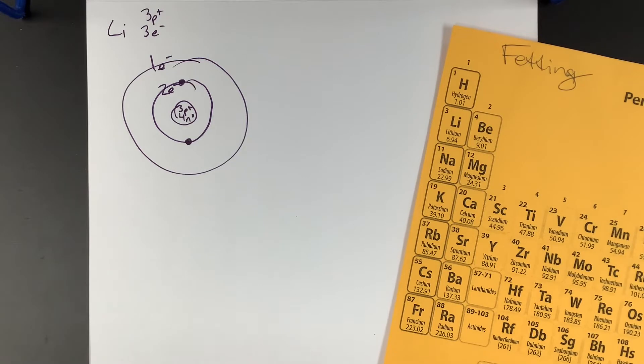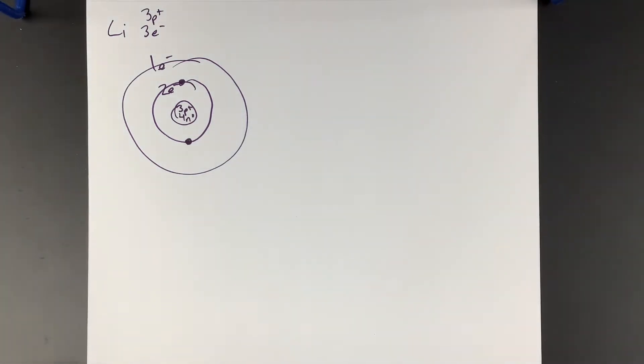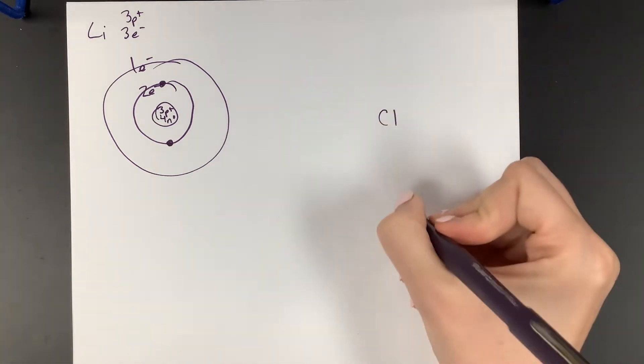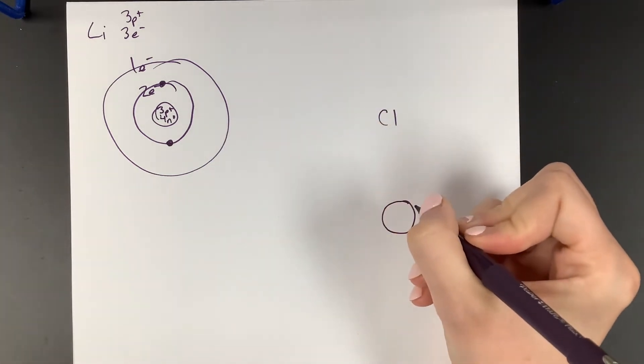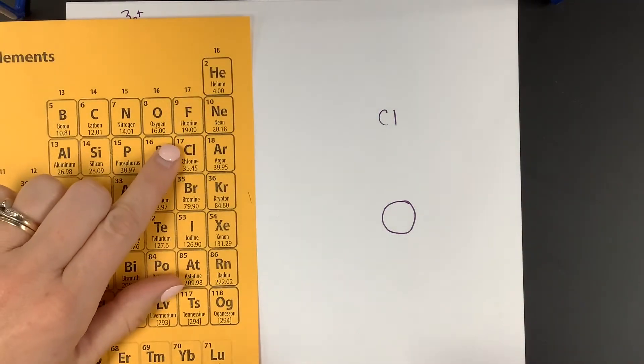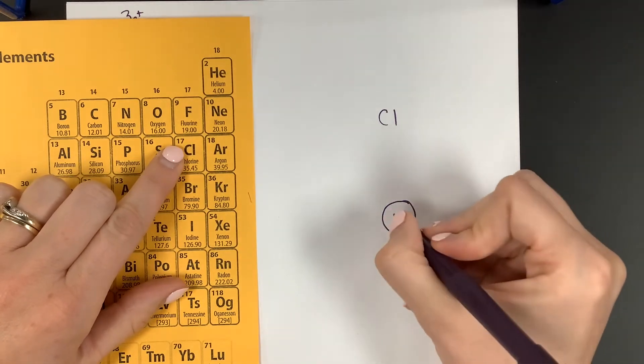Well, no, let's do chlorine because that's a bigger one. So let's do that together and then you can work on them. So let's do chlorine. Chlorine in the nucleus has how many protons? How many protons? 17 atomic number, 17. So it has 17 protons.